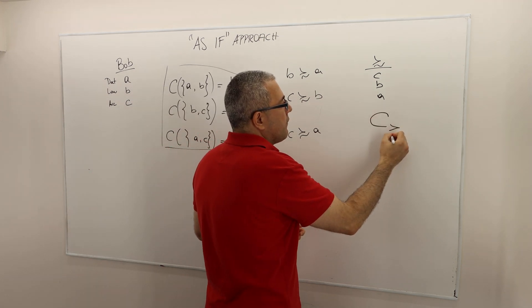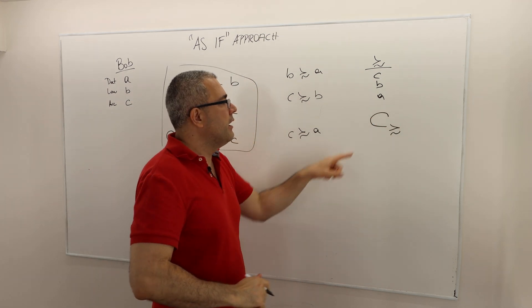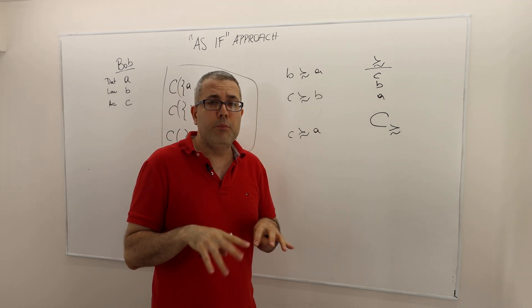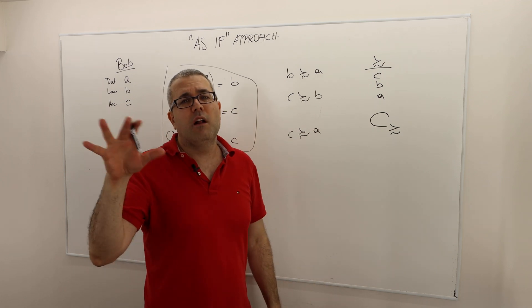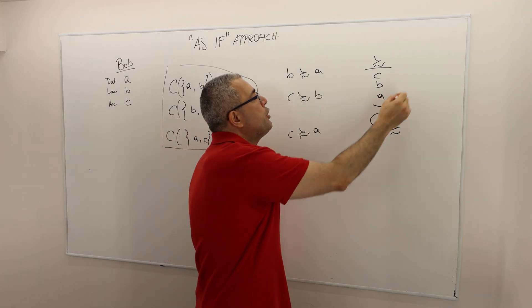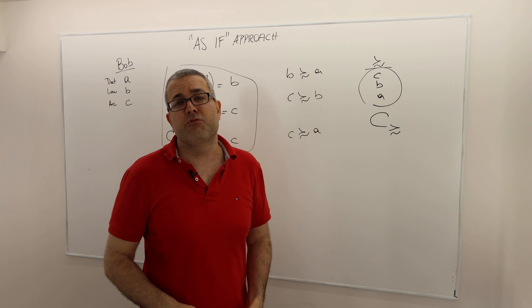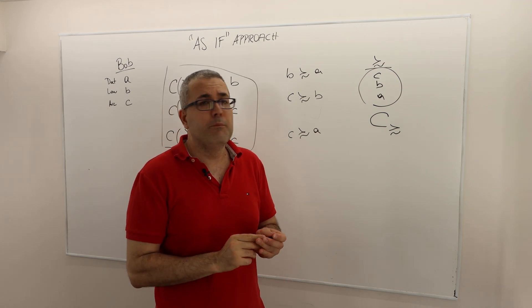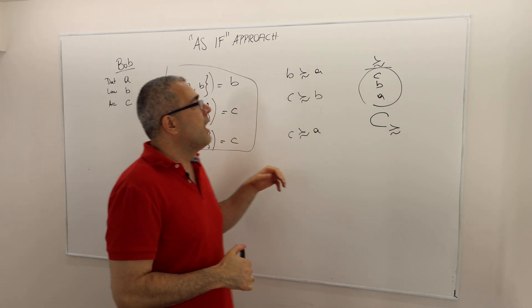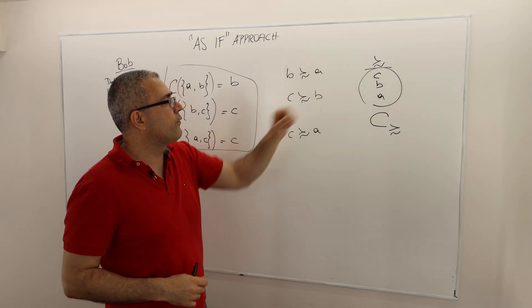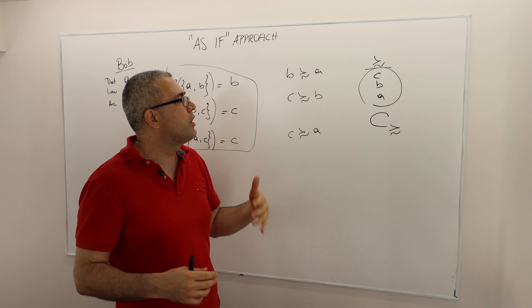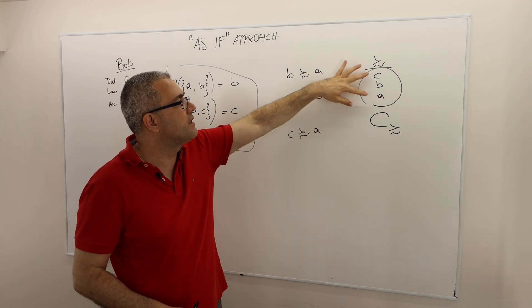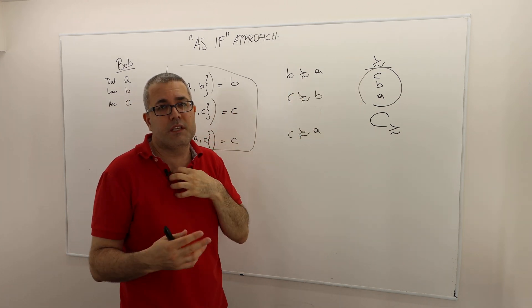So if I, instead of asking Bob, if I sort of write down a computer program and tell this program, look, whatever alternative is available, choose the best according to this ranking, all right? So if the computer was given all C, B, A as an option, he's going to go for C, he's going to go for B, whenever B, A is chosen, sort of given, and whenever C, A was given, he's going to go for C, all right?